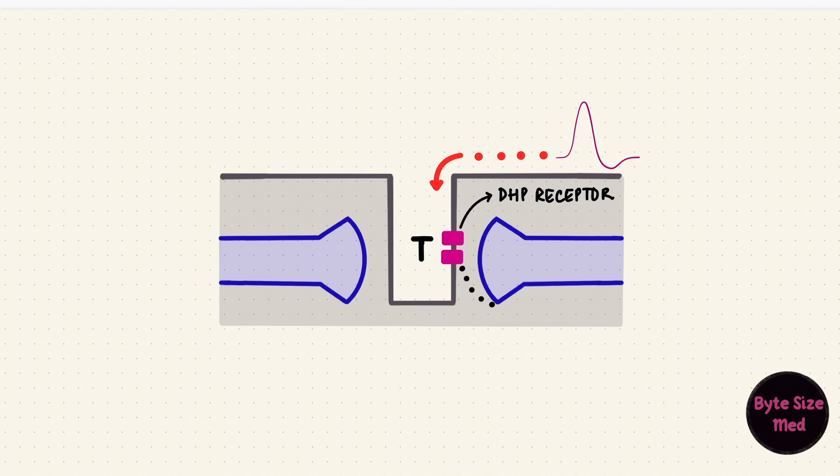This channel is mechanically coupled to a ryanodine receptor on the surface of the sarcoplasmic reticulum. When that channel opens, the stored calcium exits the sarcoplasmic reticulum and the intracellular calcium levels rise.